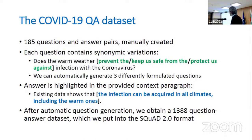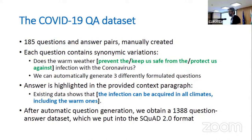We manually collected COVID-related documents from the web, and our colleagues imagined questions about COVID and searched for the probable answer inside that corpus. This is how the QA dataset was constructed.